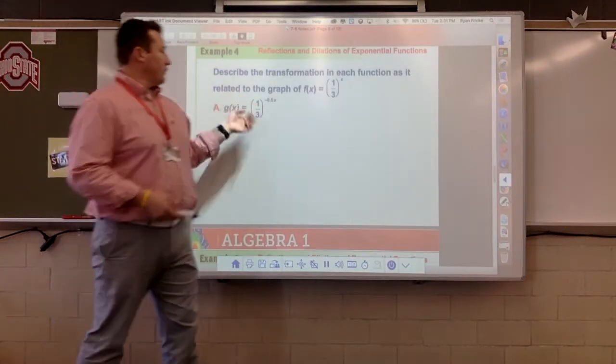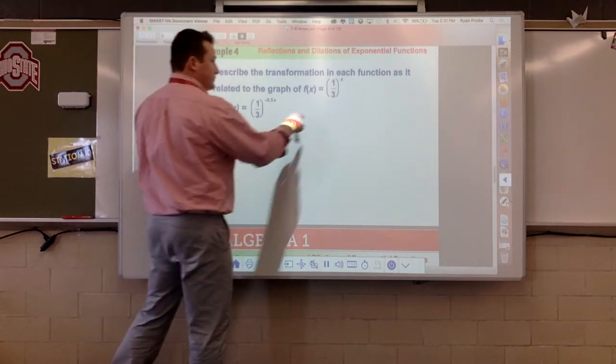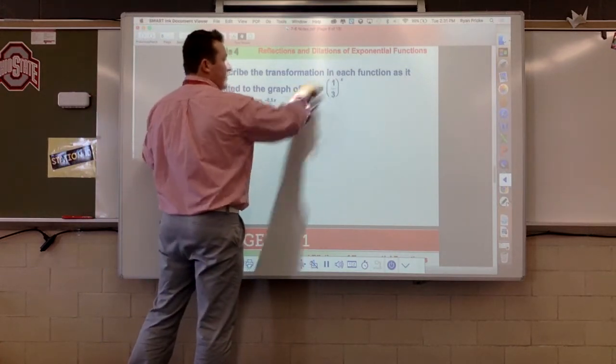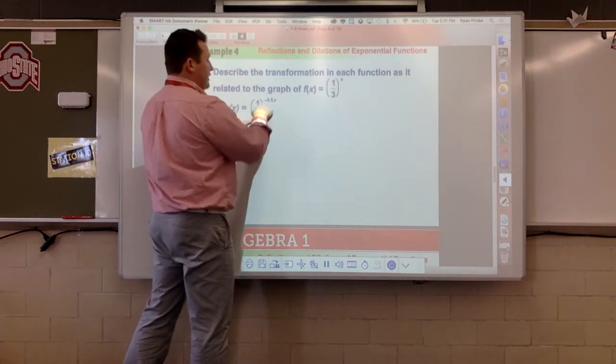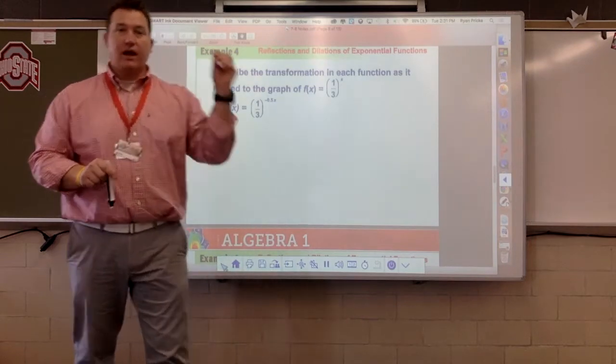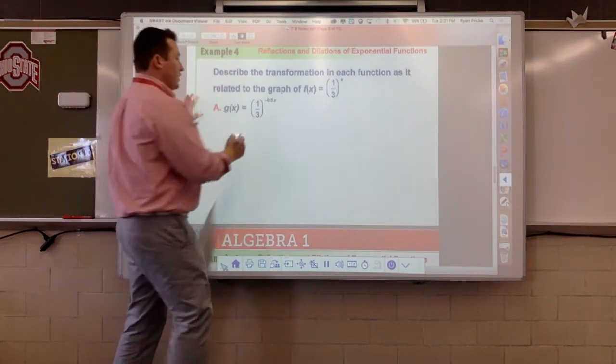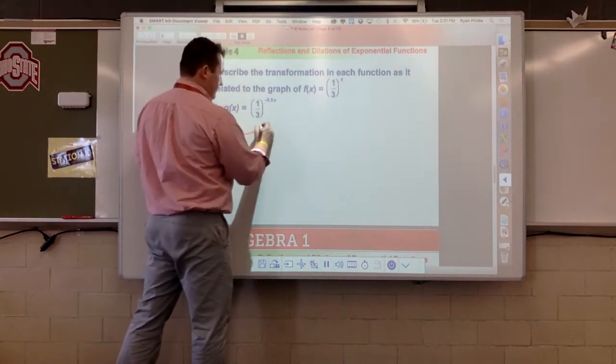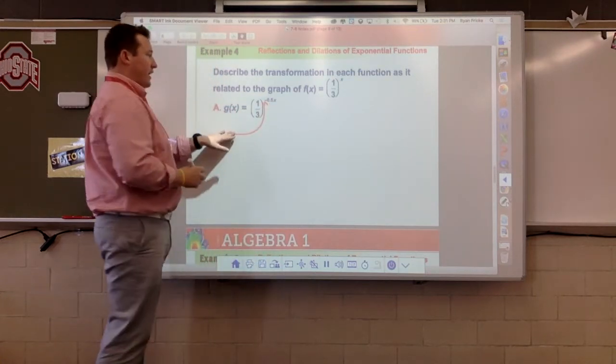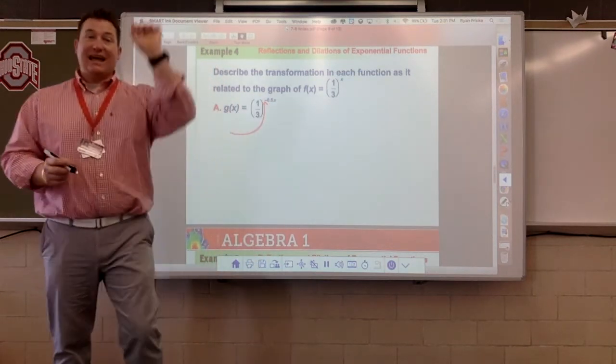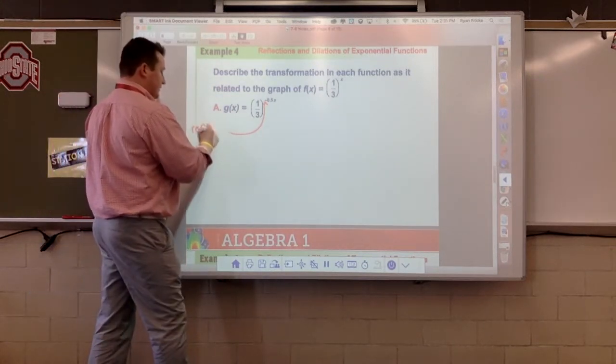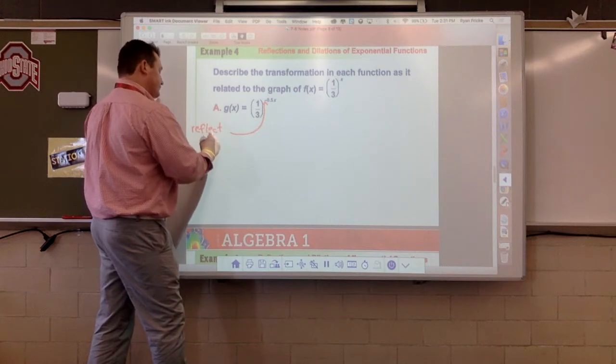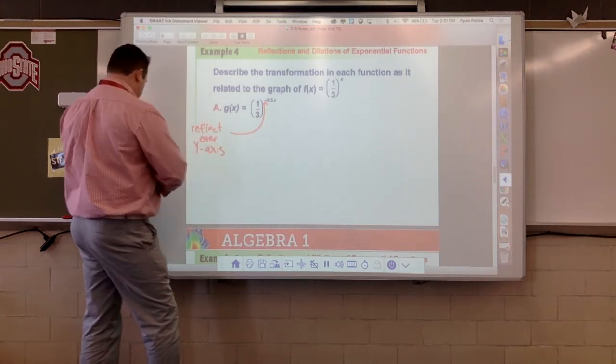And of course, they would go right to here. Two moves, folks. So f of x is one-third to the x. G of x is one-third to the power of negative one-half x. So I have two moves. First move, right here. What does this negative sign in the exponent do? That, yes, this will reflect over y-axis.